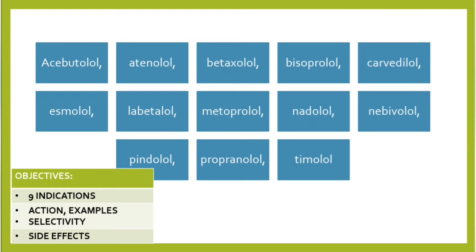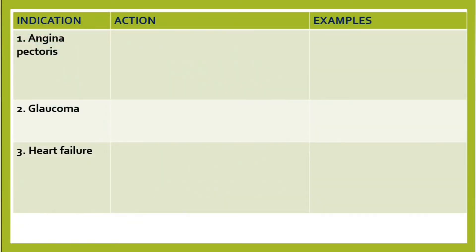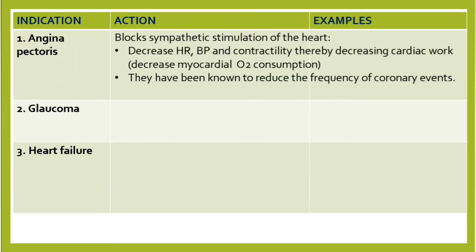The first indication is angina pectoris. Beta blockers block the sympathetic stimulation of the heart, decreasing heart rate, blood pressure, and contractility, thereby decreasing cardiac work and thus decreasing myocardial oxygen consumption. Beta blockers have been shown to reduce the frequency of coronary events.